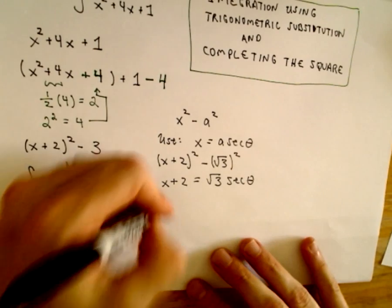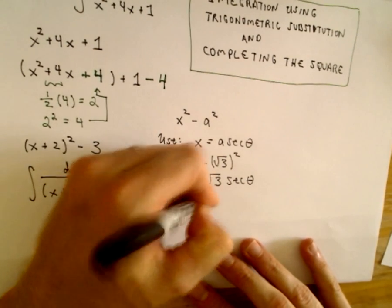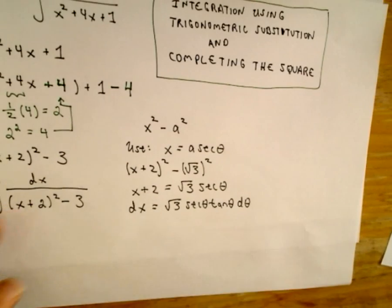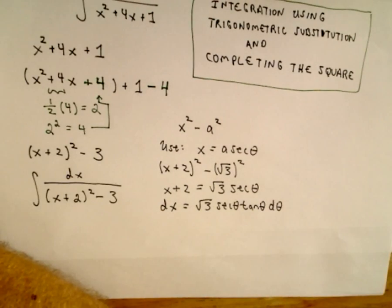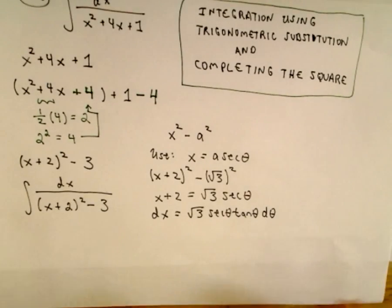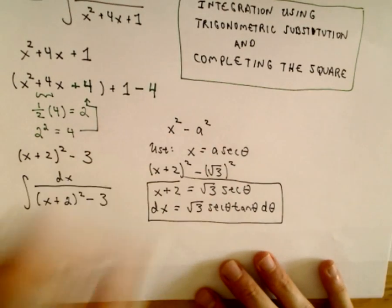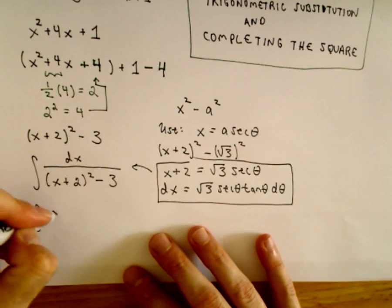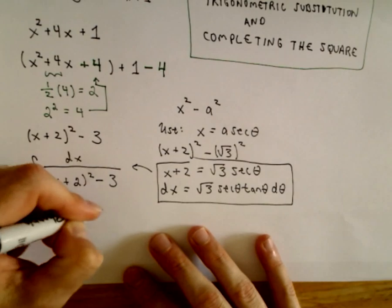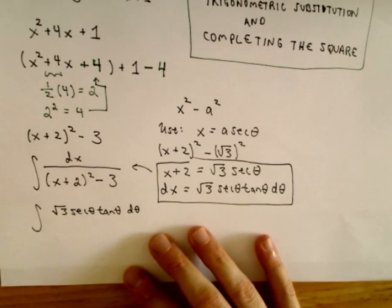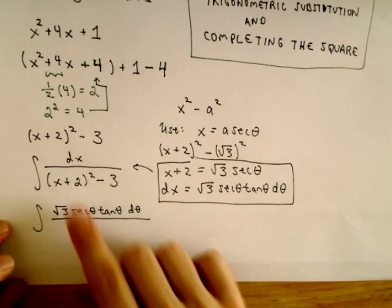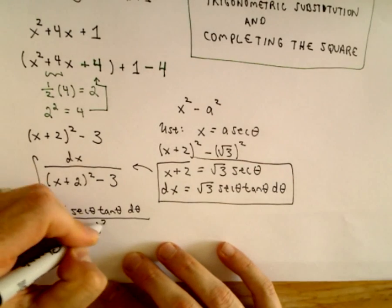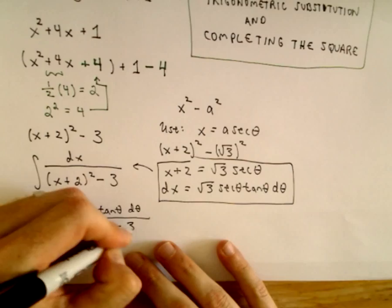If we calculate the differential, we get dx equals the square root of 3 times secant theta times tangent theta d theta. In the denominator, our x plus 2 is the square root of 3 times secant theta, and that's all being squared, then we have our minus 3 left over.